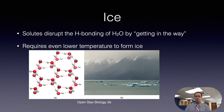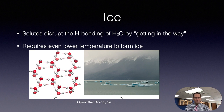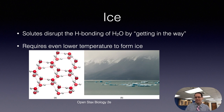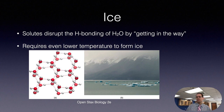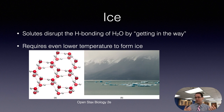Water freezes at zero degrees Celsius, and that's the basis for the definition of the Celsius temperature scale. Pure water freezes at zero degrees Celsius. Here we have a picture of ice floating in the ocean, and that water is going to freeze at a much lower temperature because solute molecules disrupt hydrogen bonding. So it requires an even lower temperature to form ice. You can measure the temperature of the Arctic Ocean and it will be below zero degrees Celsius, but it won't be in the solid form.